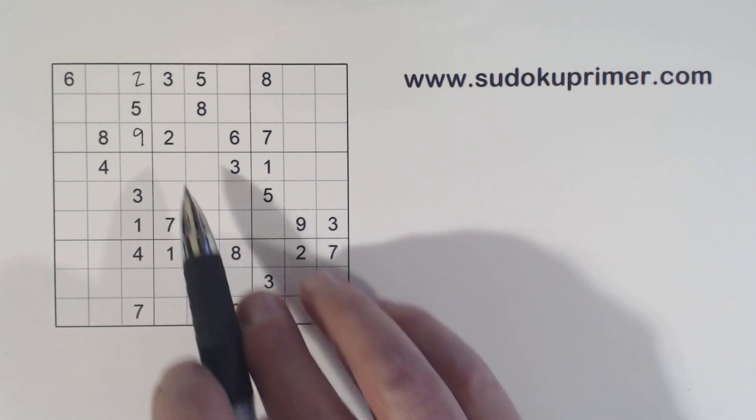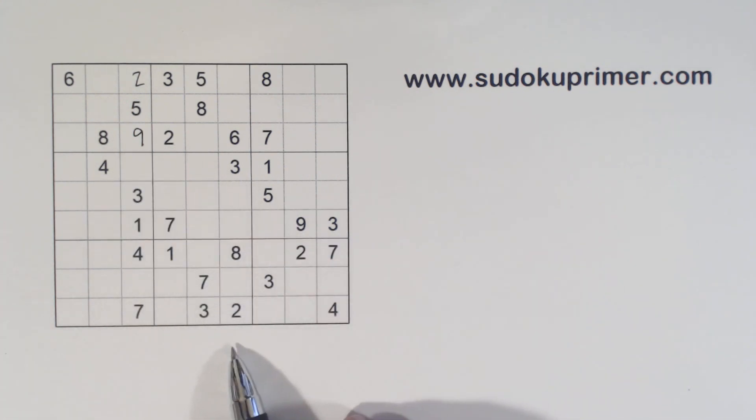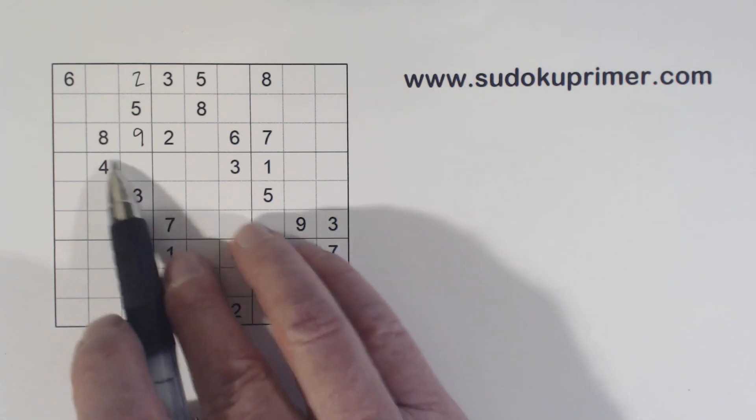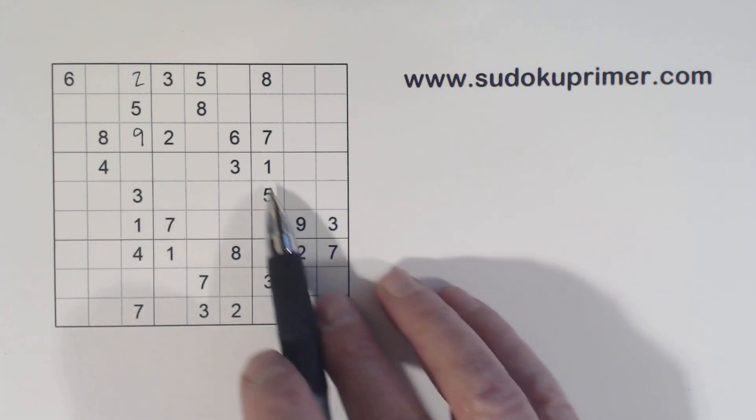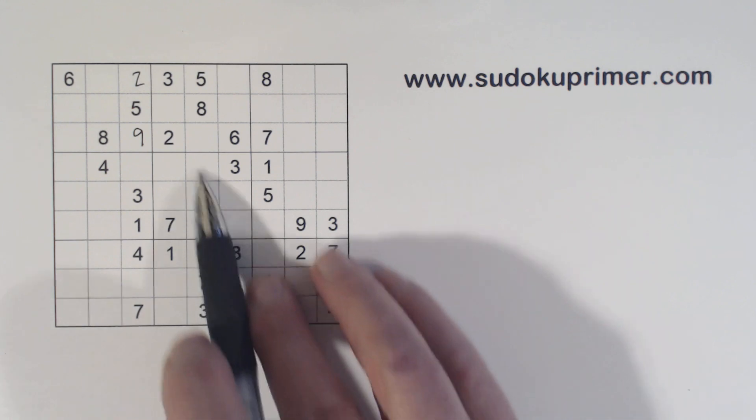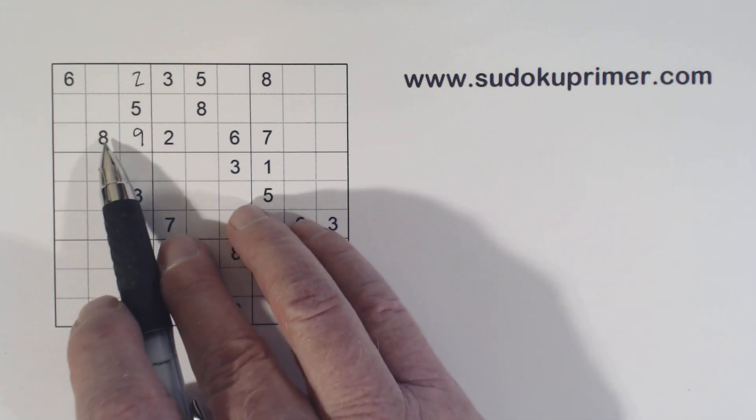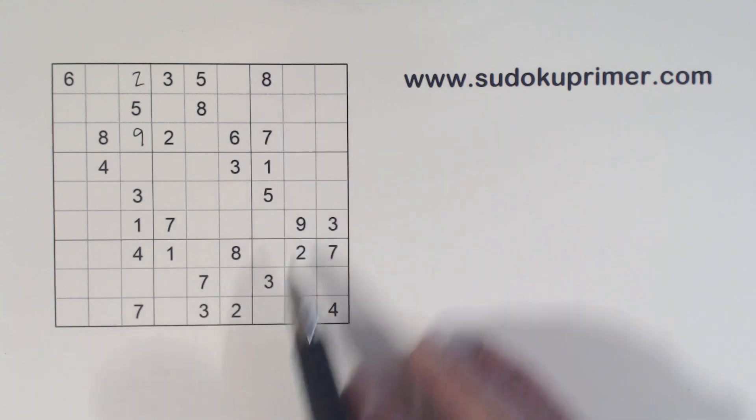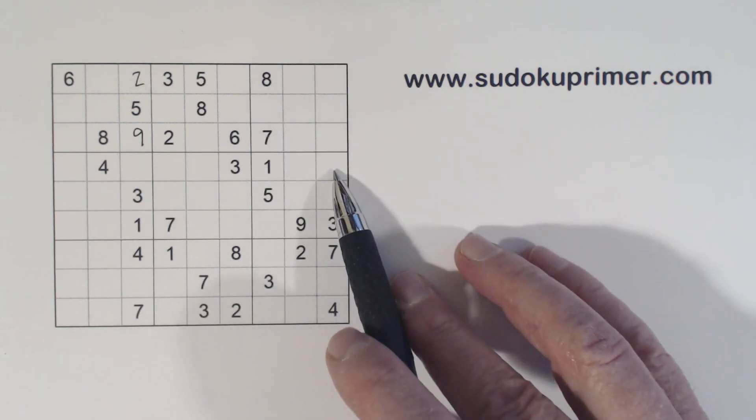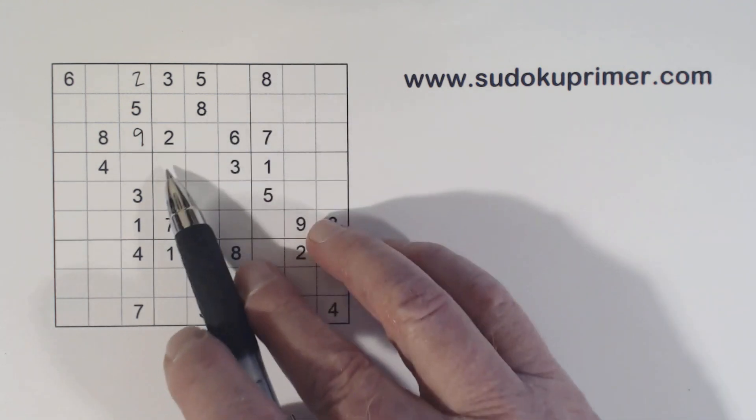And then one thing about this puzzle that makes it harder is you can't really do any cross hatching right at the beginning. This one I'm going to show you now is about as close as you can get to cross hatching, but I had to use double row elimination to get it to work. We've got 8 here, we've got 8 here, so 8 goes there, 8, 8, 8.